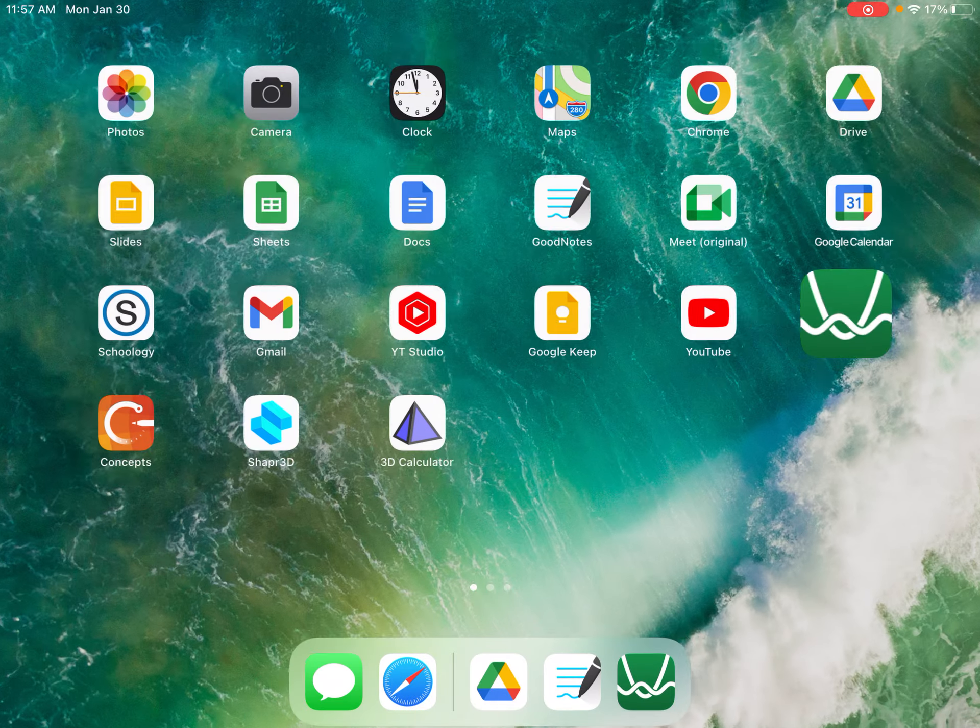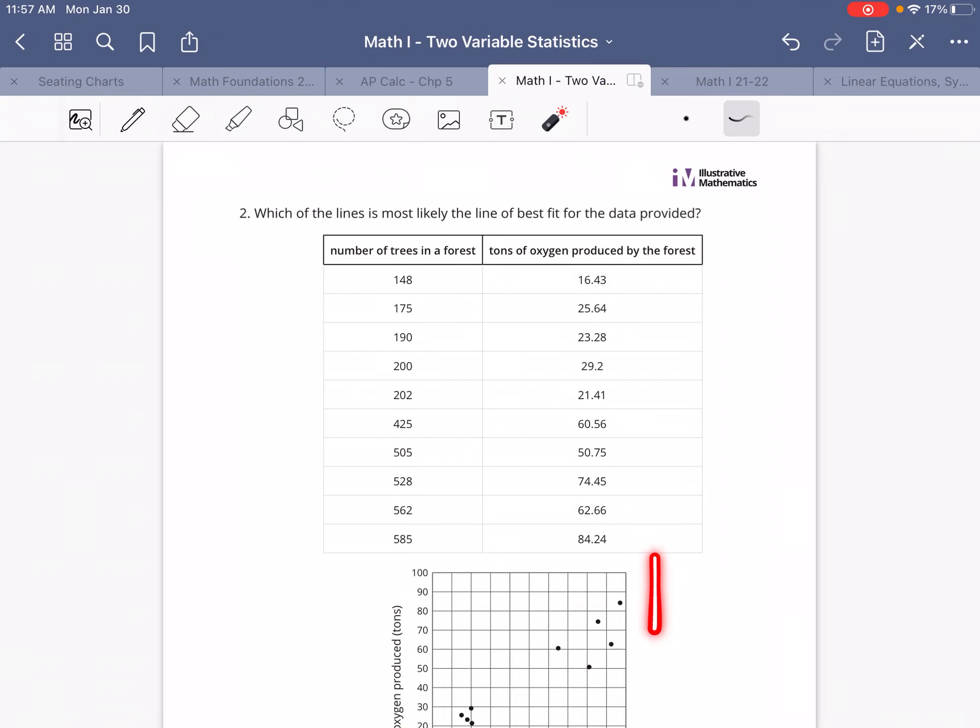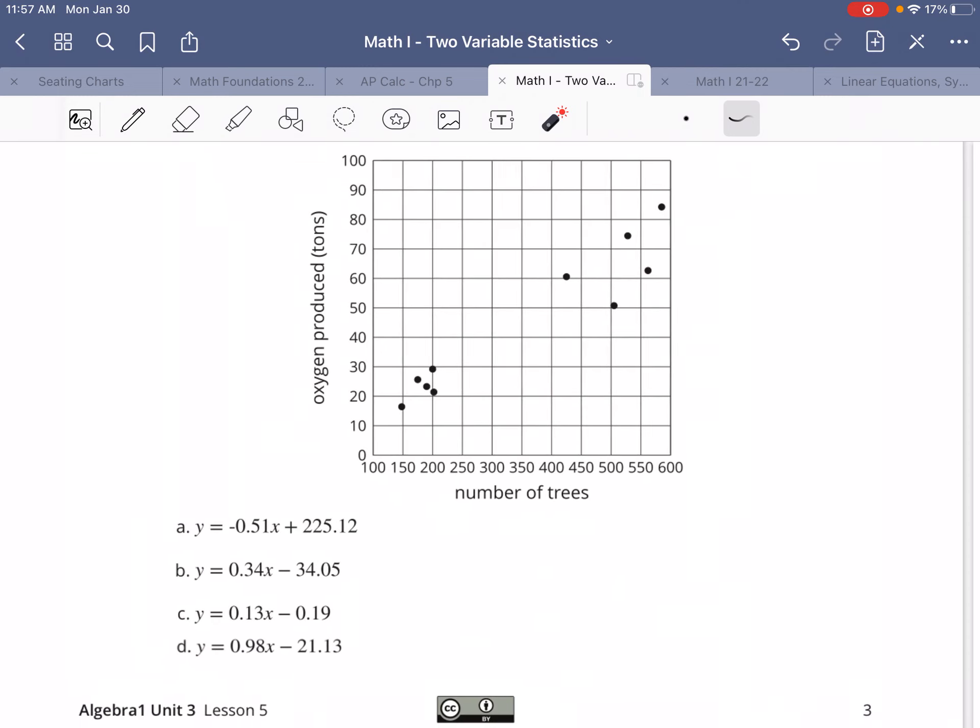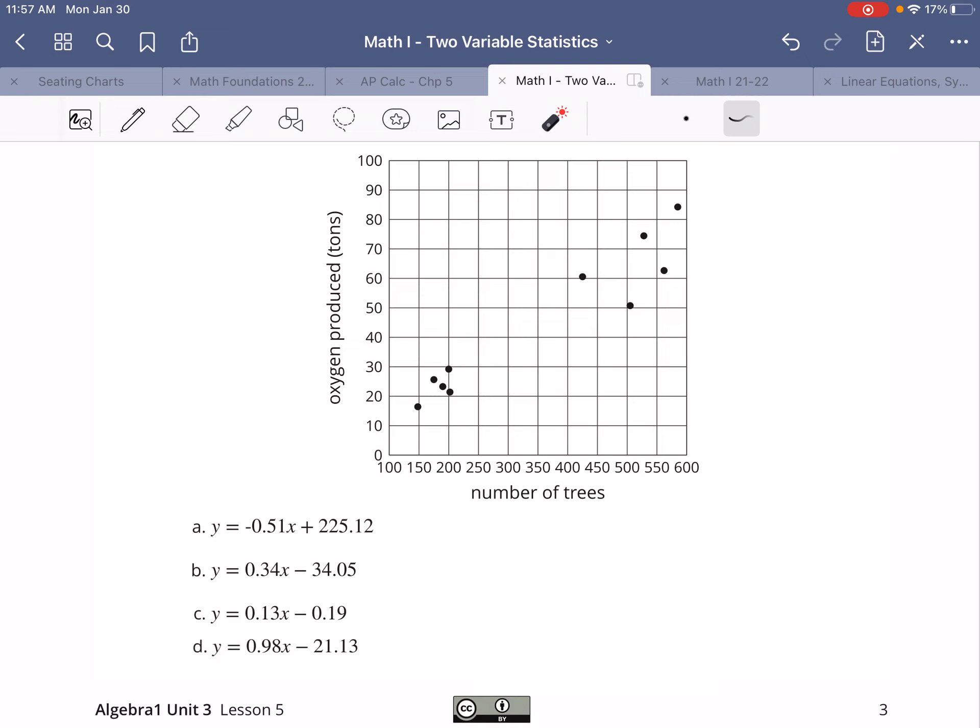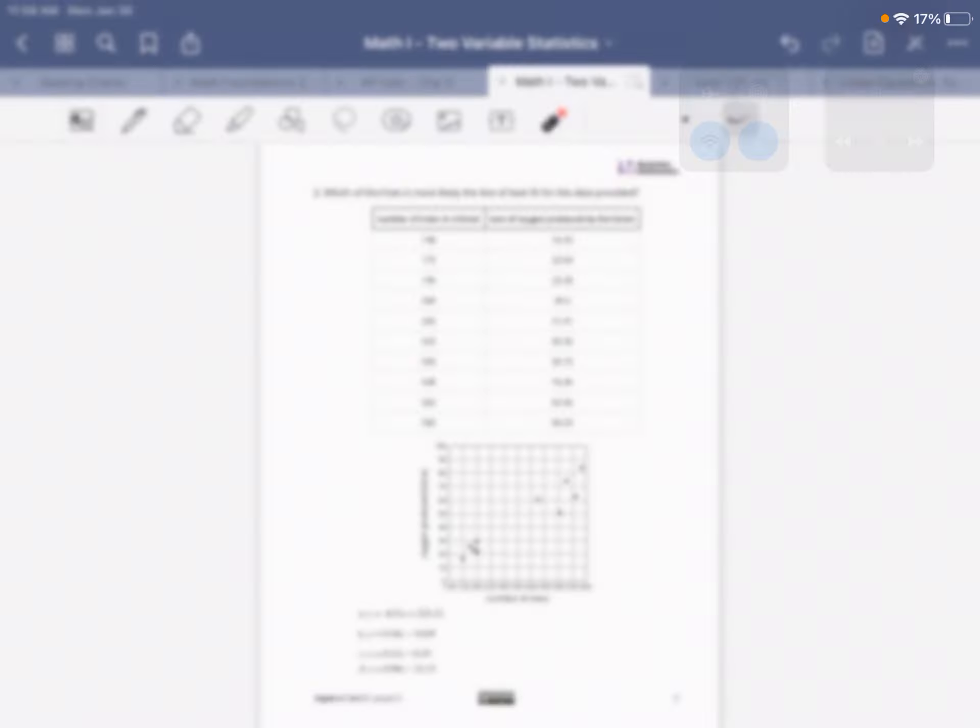So if we go back to the cooldown, that's all you need to do. Type in your information. Do the y sub 1 squiggle x sub 1 mx sub 1 plus b. Yes, there we go. And figure out which of these lines right here is closest to what you came up with. If you have any other questions, let me know.